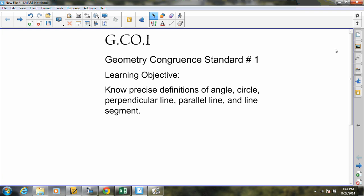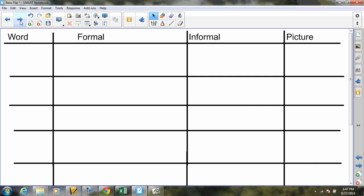In order to do this, I've created this chart where we can fill in our five vocabulary words. We need to know circle, angle, parallel line, and this may run a little bit long, but perpendicular line.